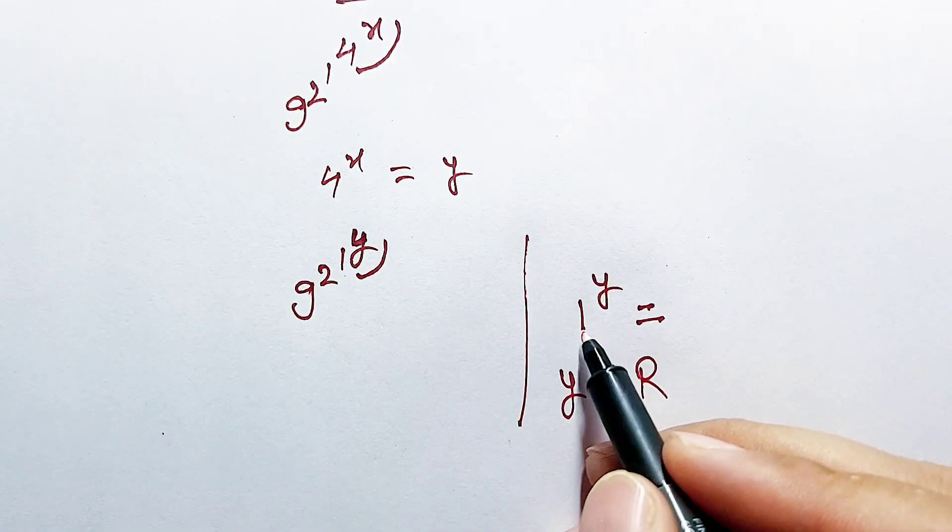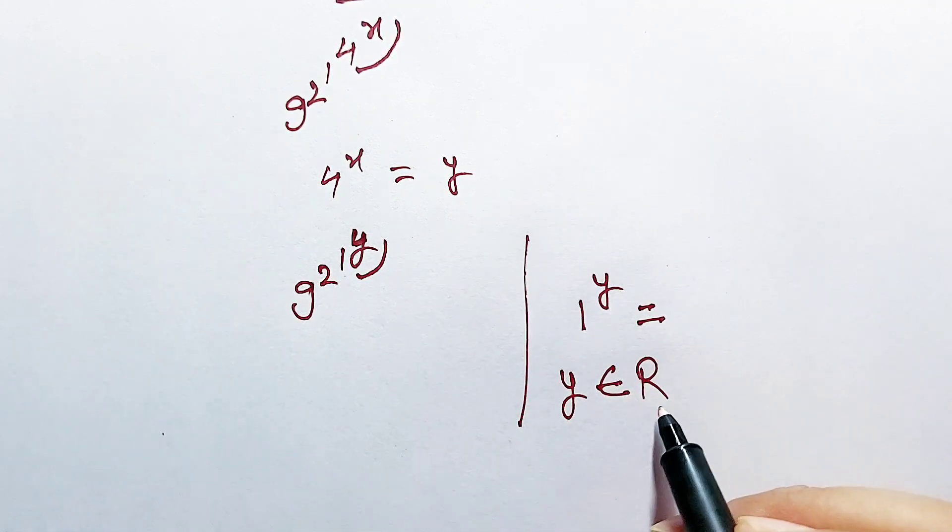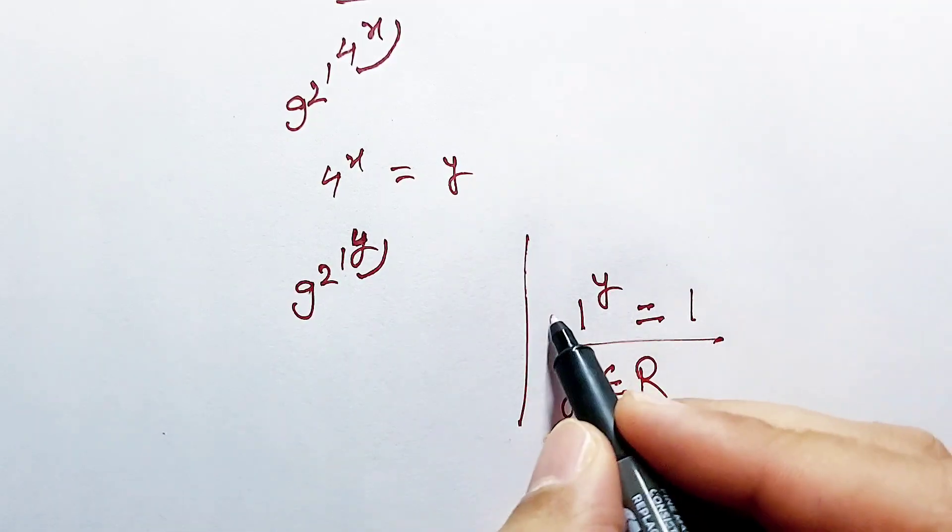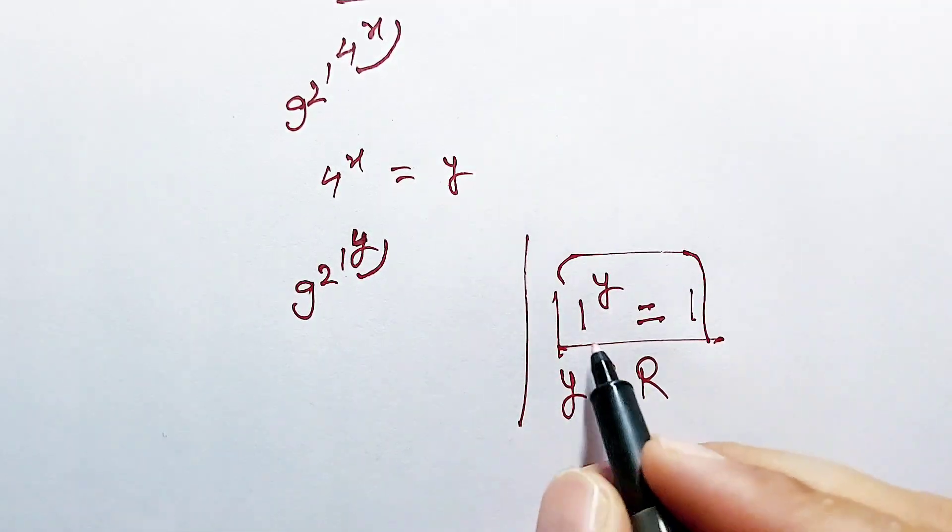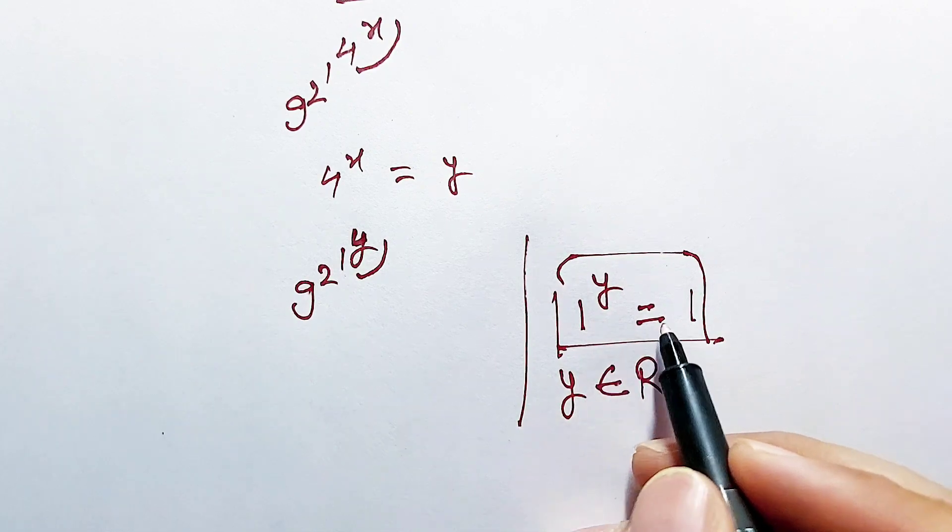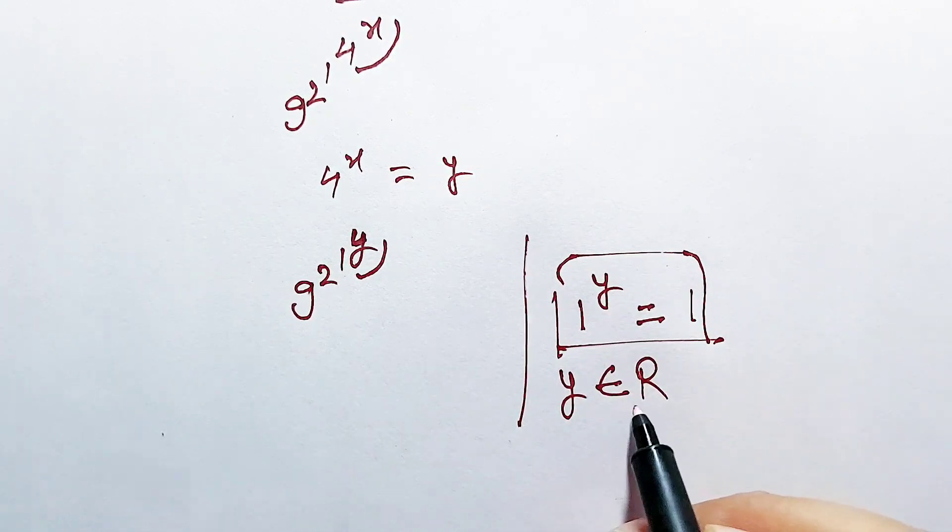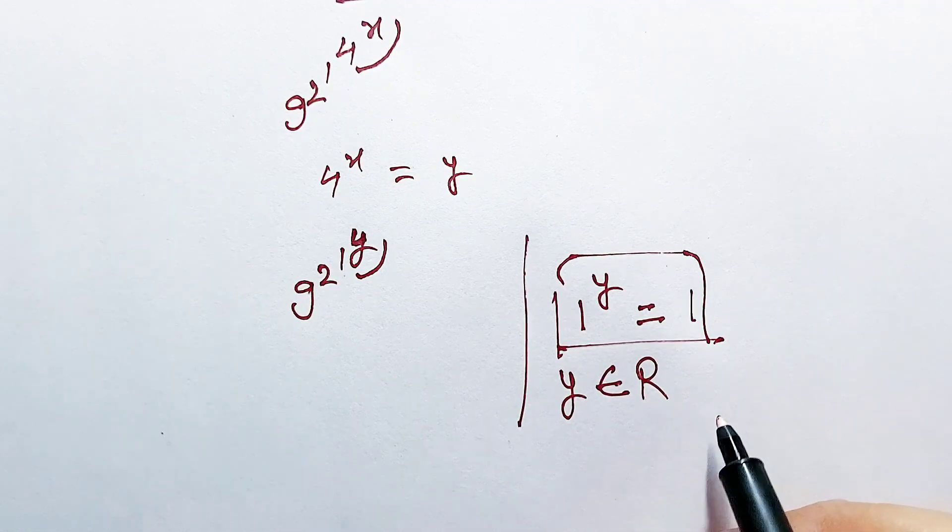Any power of 1 which is belonging to R is always equal to 1. So any power of 1 is always equal to 1, and that power is belonging to R, which means real number.